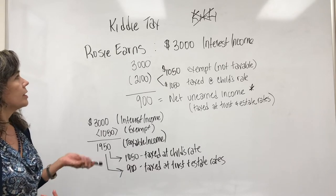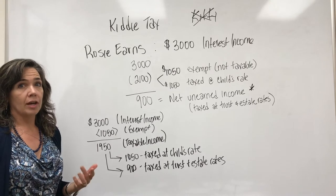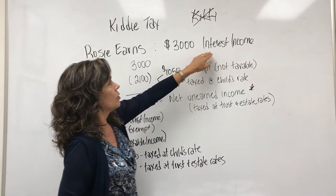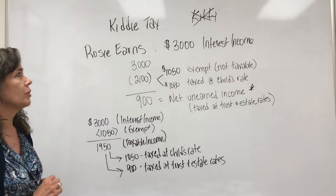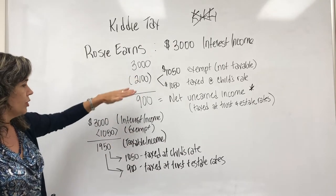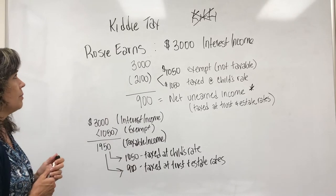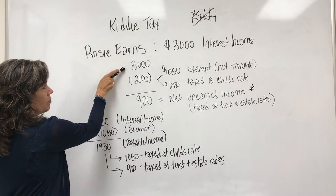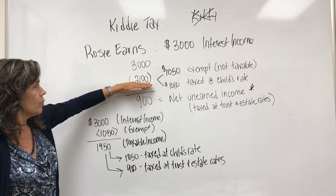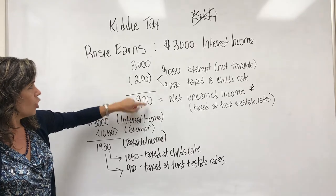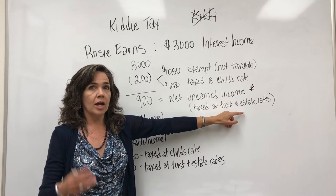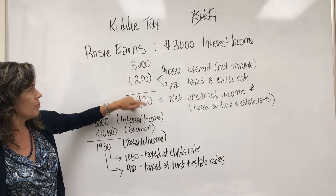So how does kiddie tax work? Let's say we have a child named Rosie. It needs to be a child dependent under 17. She has unearned income — investment income — so we'll say interest income of $3,000. How is kiddie tax going to come into play? We have her investment income and we get a deduction of $2,100 right off the bat. What's left over after we deduct this is the net unearned income, and it's taxed at the higher rate. So if asked what's taxed at the kiddie tax higher rate, it's always the net unearned income — whatever is above this $2,100.